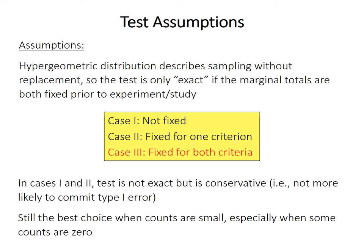Fisher's exact test is only exact if both marginal totals are fixed, because fixing them means the total number of each item is set beforehand — removing one changes the probability of finding another. However, when marginal totals aren't fixed, as in case two where only one marginal is fixed, the test is still applicable even in cases one or two. It is conservative in those cases — statisticians mean by conservative that it's not more likely to produce a type one error, so the risk of type one error is not elevated. Essentially, Fisher's exact test is still the best choice when counts are small, especially when some are zero, in a two-by-two contingency table, regardless of the marginal total assumption.